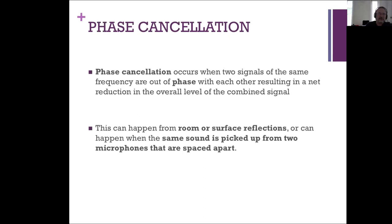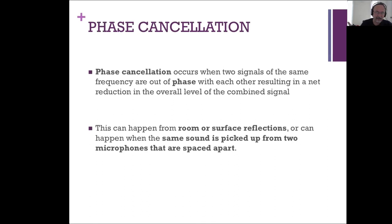Think about recording a full drum kit with 14 microphones — there are 14 different path lengths from the snare drum to each microphone, so you're going to get interactions between those mics. Microphone placement becomes really important when you've got multiple mics, and there are principles and guidelines that help you position mics so they work together well rather than interfering with each other and causing a detriment to your sound.